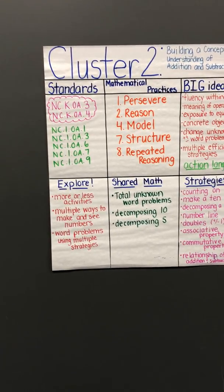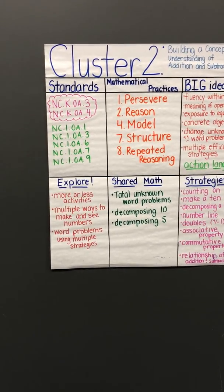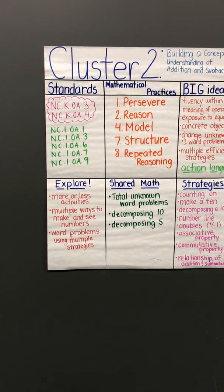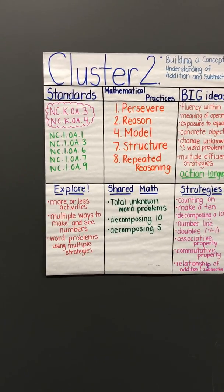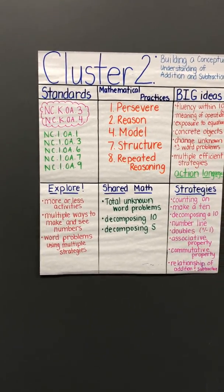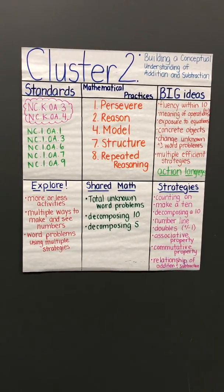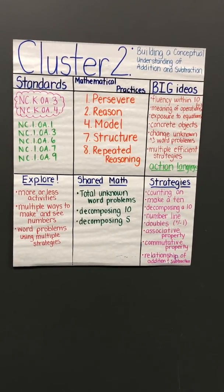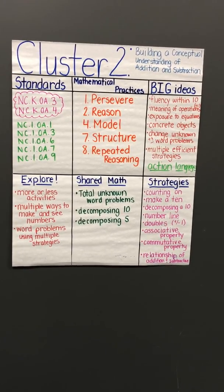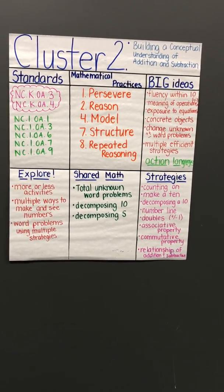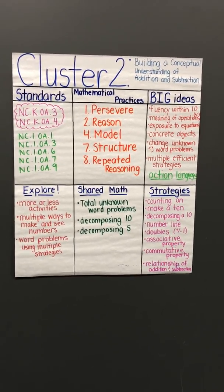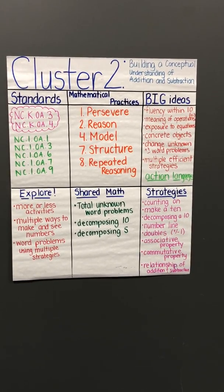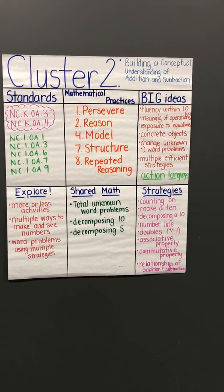OA7 covers understanding of the equal sign and what it means, and OA9 is fluency within addition and subtraction. The mathematical practices that are big in this cluster are practices 1, 2, 4, 7, and 8.